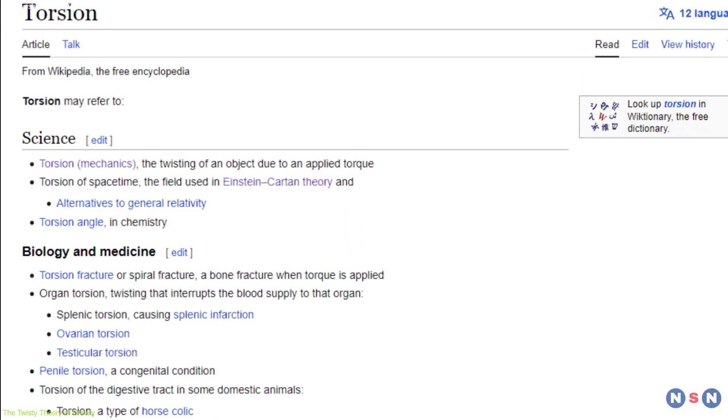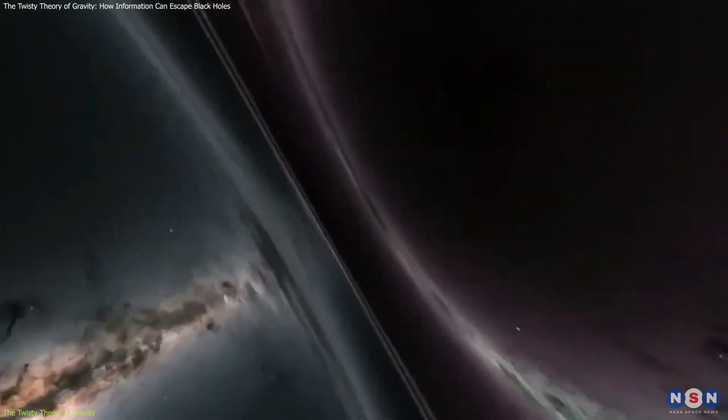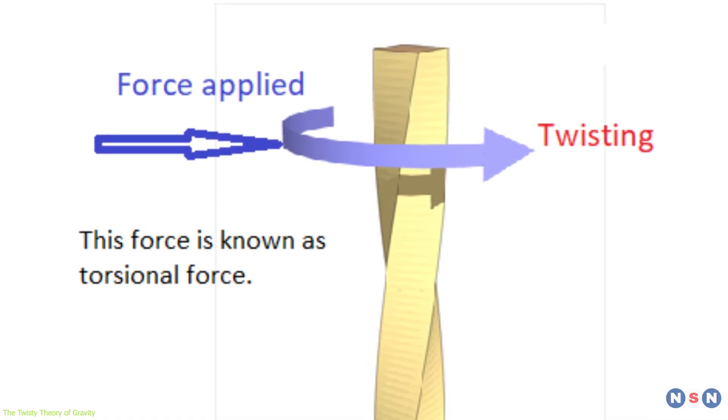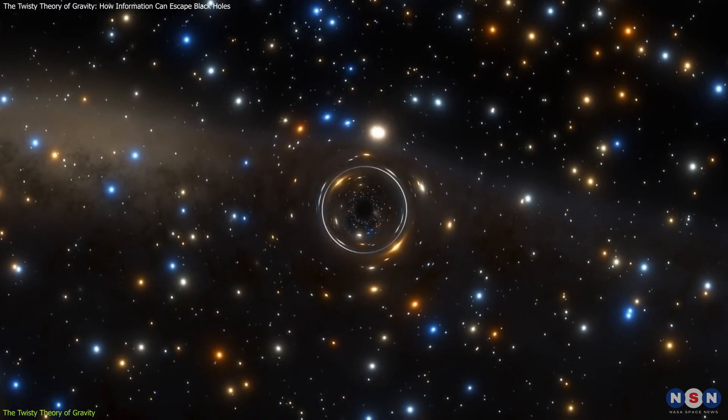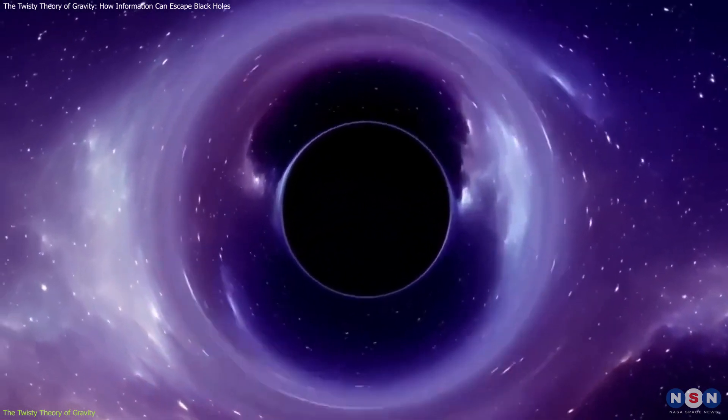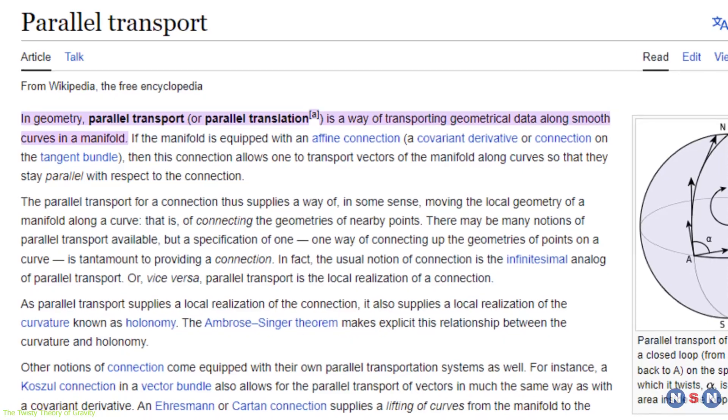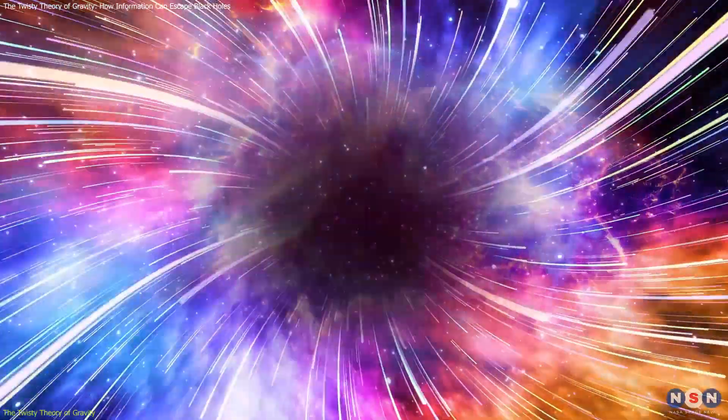Torsion, which is a measurement of how much space-time twists around itself, is what causes the twistiness of space-time. It can be related to the spin and angular momentum of matter and energy, and it can also affect the propagation of light and gravity waves. The twisty theory is also known as teleparallel gravity because it uses parallel transport, which is a way of moving vectors along curves without changing their direction, to define the geometry and dynamics of space-time.